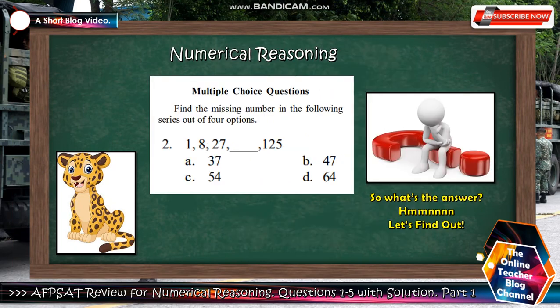Next, find the missing number in the following series of four options. Number 2: 1, 8, 27, blank, 125. Letter A is 37, B is 47, C is 54, D is 64. So what's the answer? Let's find out.